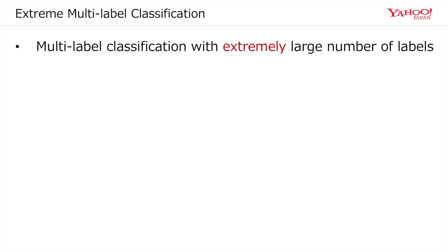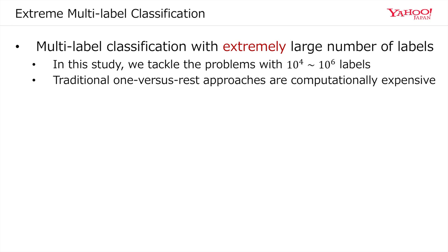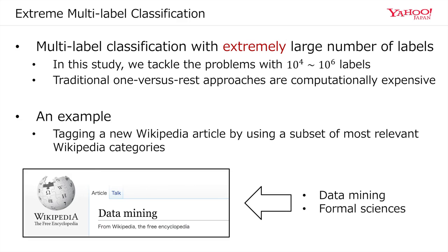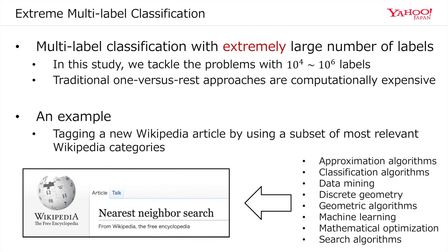Extreme multi-label classification has recently been receiving much attention. This is a multi-label classification with an extremely large number of labels. In this work, we tackle problems with 10,000 to 1,000,000 labels. Traditional one-versus-rest approaches are computationally expensive in both training and prediction. In one example, an extreme multi-label classifier is learned to tag a new Wikipedia article by using a subset of the most relevant Wikipedia categories.